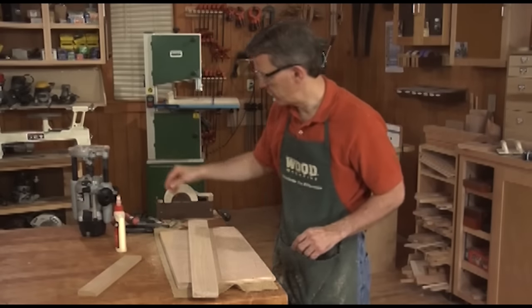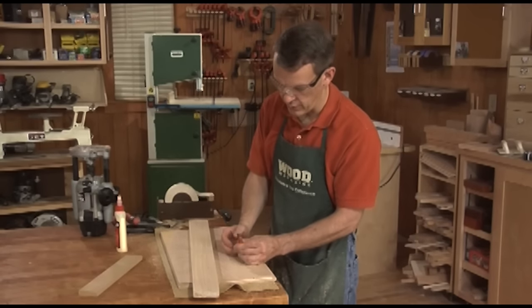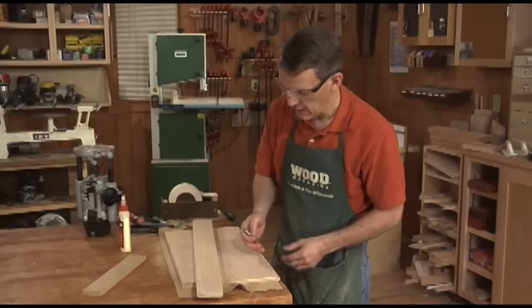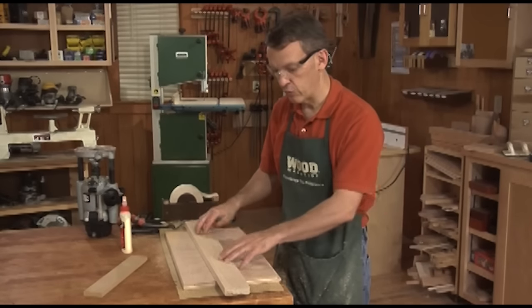The next method is to use, if you don't have a rabbeting bit like that, you have a straight bit in your bit cabinet. A straight bit can also be used to route a rabbet along the edge of a workpiece. The one thing you'll need to do, though, is add a way to guide the router. I'm going to change out the bits and we'll get set up for that.